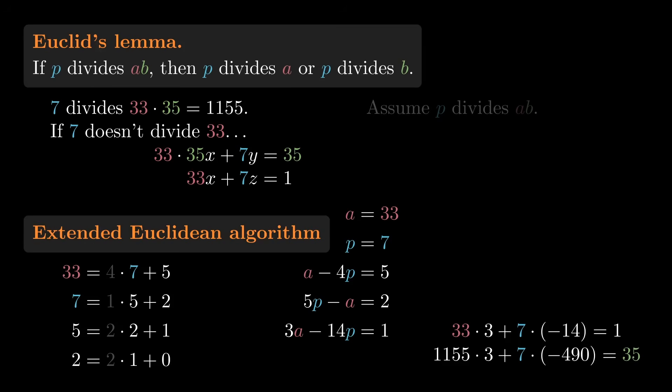And now we have what we wanted. 7 divides 1155, so 35 is the sum of two multiples of 7. This implies that 7 divides 35, which is what Euclid's Lemma claims. And we never assumed that 7 divides 35. We only used that 7 divides 33 times 35.